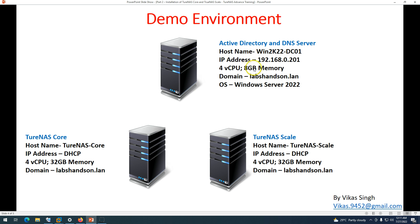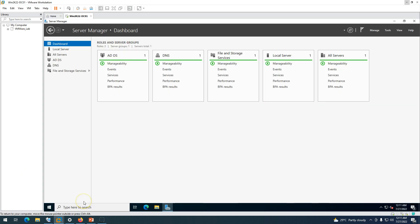You can see the configuration — IP address, CPU, memory, and disk. The two machines we are going to deploy in this video are TrueNAS Core and TrueNAS Scale. Both will get an IP address from DHCP initially. I have a modem providing internet and DHCP. For Core, I'm going to give 32 GB of memory.